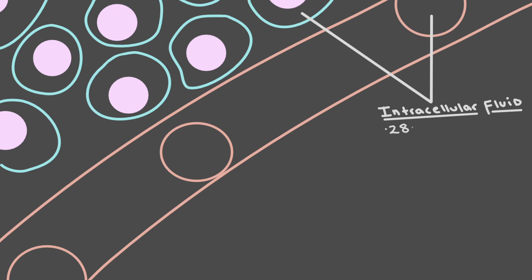So intracellular fluid is inside your cells and composes the majority of fluid in your body, about 28 liters, and contains things like potassium and proteins among other things.